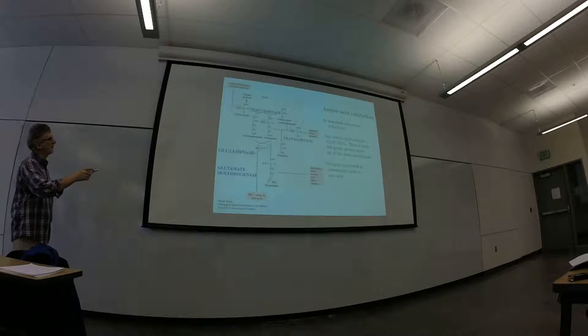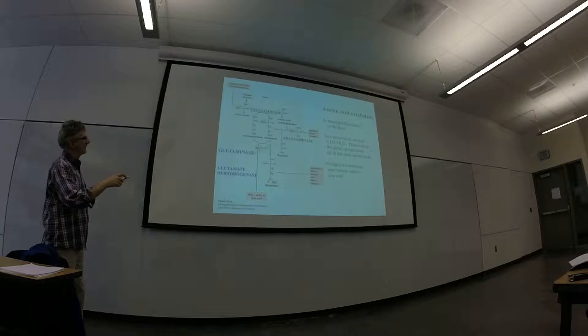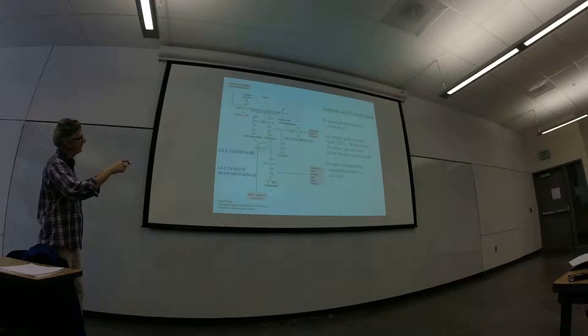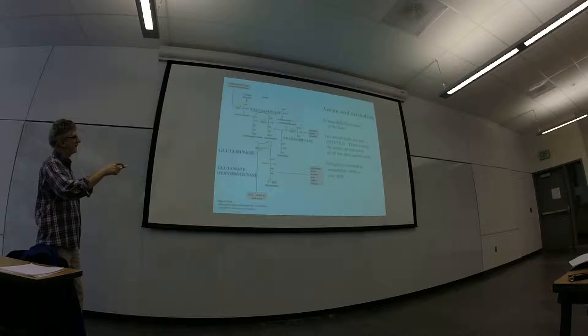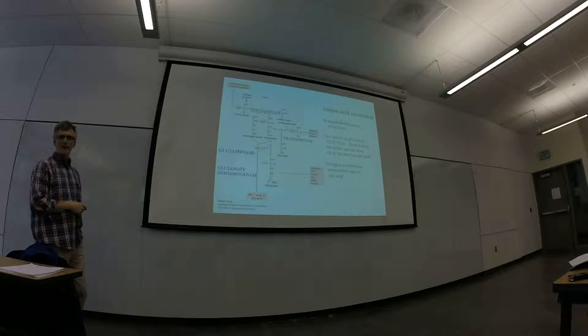Because this transaminase is specific for alpha-ketoglutarate, takes in any amino acid and uses alpha-KG, the product of it is always glutamate.